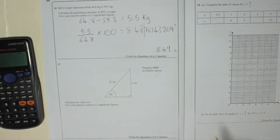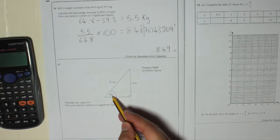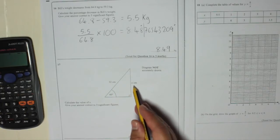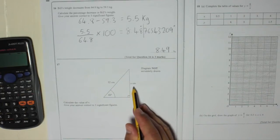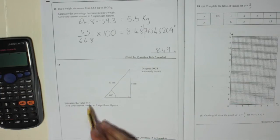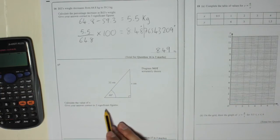Right, question 17. You've got a right-angled triangle with an angle, a length, and a length that isn't given, X centimeters there. Calculate the value of X. Give your answer correct to three significant figures.